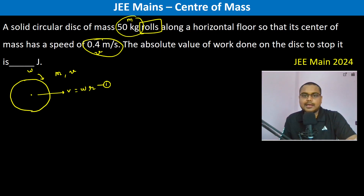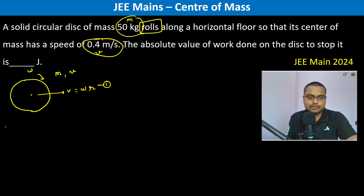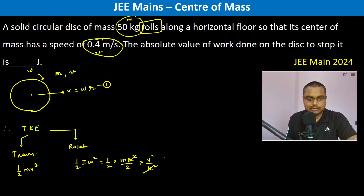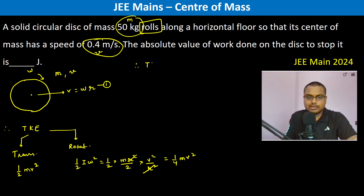The center of mass speed and the absolute value of work done on the disk to stop it equals the total kinetic energy — translational kinetic energy plus rotational kinetic energy. Translational is half into mv squared; rotational is half into I, where I is mr squared by 2, into v squared by r squared. The r squared cancels, giving one quarter mv squared.